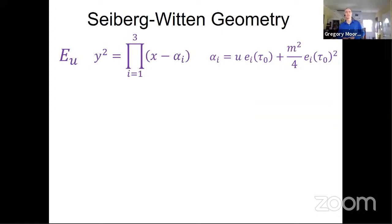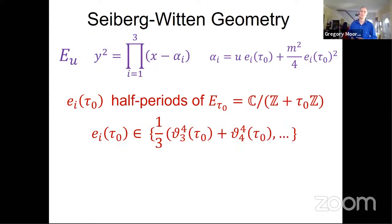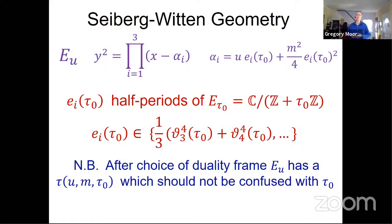Seiberg and Witten taught us that those abelian varieties should be Jacobians of a holomorphic family of curves equipped with a meromorphic differential. In this case we use the presentation from the original Seiberg-Witten paper: a family of elliptic curves written explicitly as a product over three roots alpha_i, where alpha_i is expressed in terms of u, m, and tau naught. The dependence on tau naught is through the half-periods of another elliptic curve E_tau_naught, expressible in terms of modular forms and theta functions.